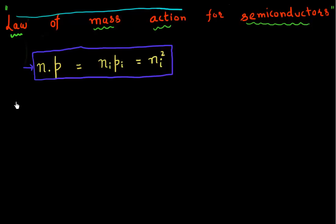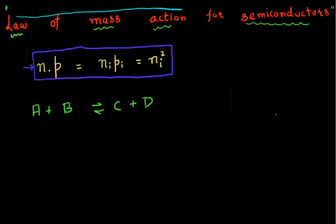Another place where you might have heard of the law of mass action is when you were taking freshman chemistry or chemistry in high school. When this law of mass action is typically applied there, let's say you have a reaction between compound A and B, and they react to form C and D. The rate of the forward reaction is proportional to the amount of species A and also proportional to the concentration of species B, possibly multiplied by different exponents. This in general is what is known as the law of mass action.